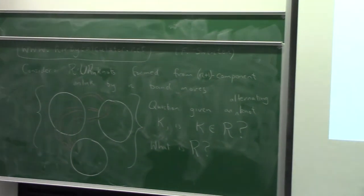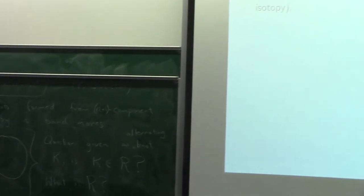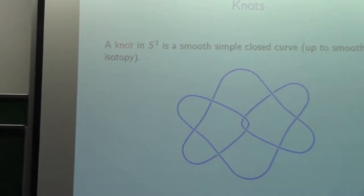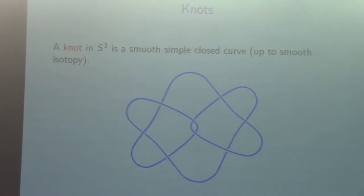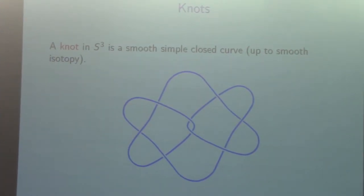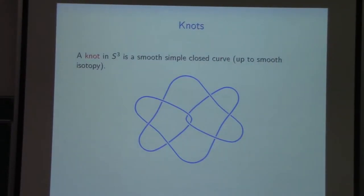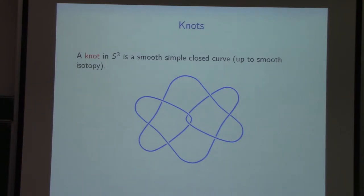A knot is a smooth simple closed curve in S³, up to smooth isotopy. Here's an example which is not an alternating knot — it's a non-alternating diagram because this strand goes over and over. This particular knot, in fact, does not admit an alternating diagram, although that needs some work to show.